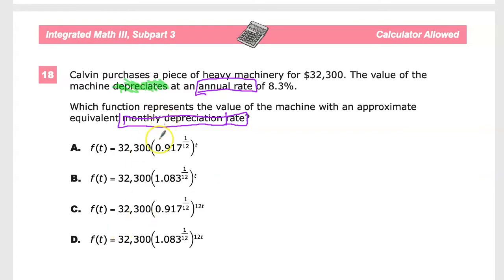But we want to do depreciation by the month, which means we're going to have to take that 8.3% and break it into 12 parts, or apply it 12 times a year.